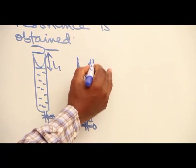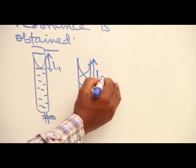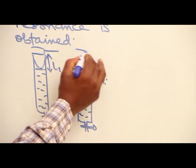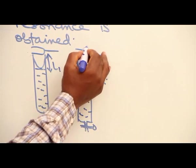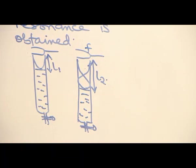This is the length of the air column. That is the second position of resonance. This is the tuning fork of frequency F.